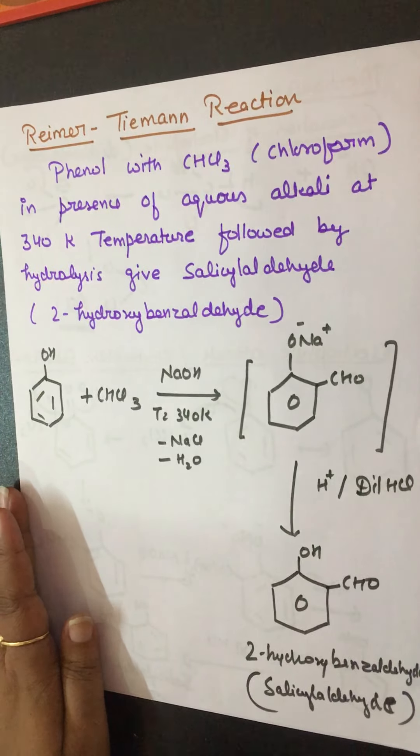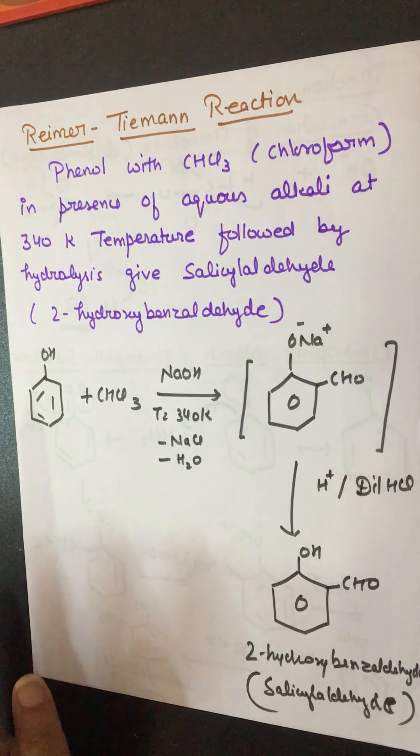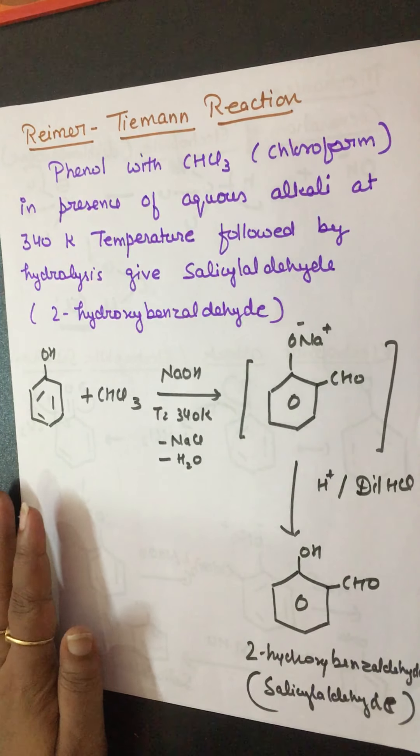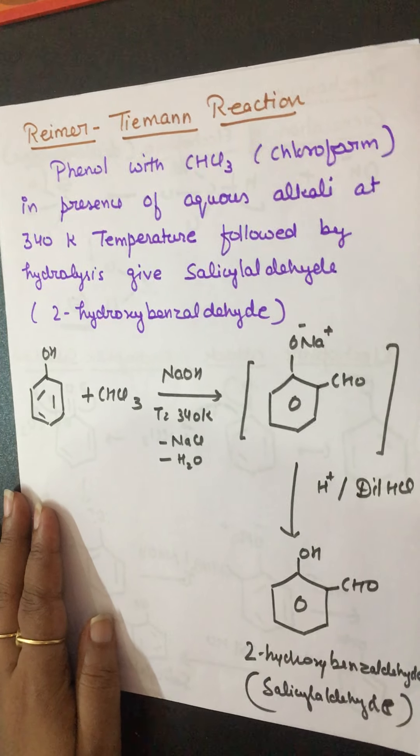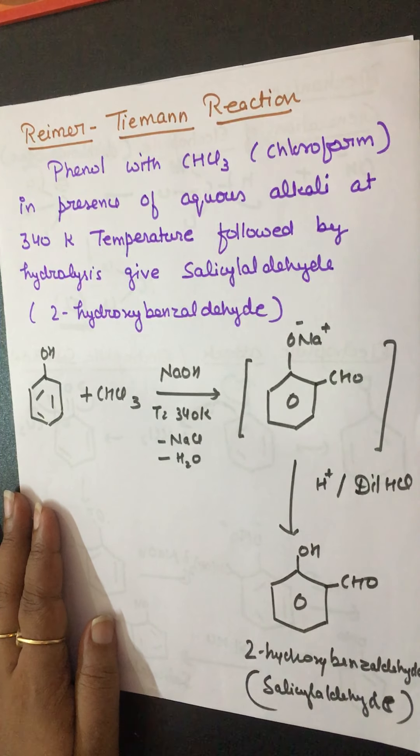Reimer-Tiemann reaction takes place in presence of chloroform. What is the final product? 2-hydroxybenzaldehyde. Next video me milein, next topic ke saath. Till then, goodbye.